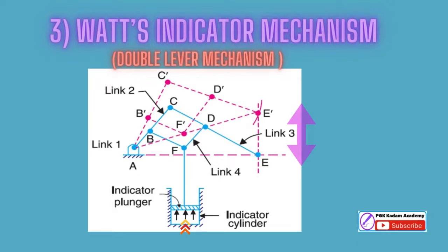Watt's indicator mechanism or double lever mechanism. Figure shows a Watt's indication mechanism, commonly known as a double lever mechanism, which has four links.